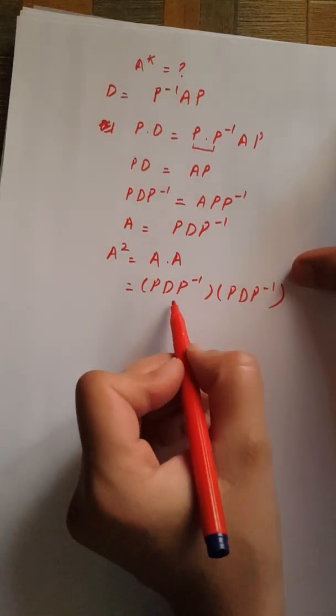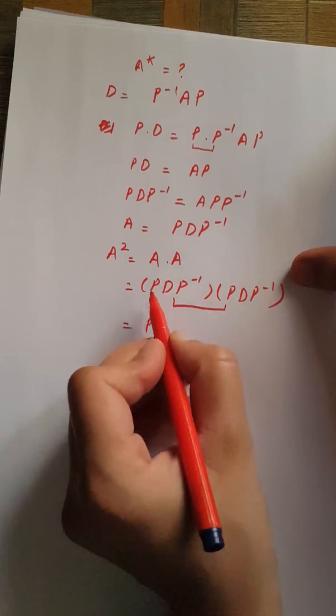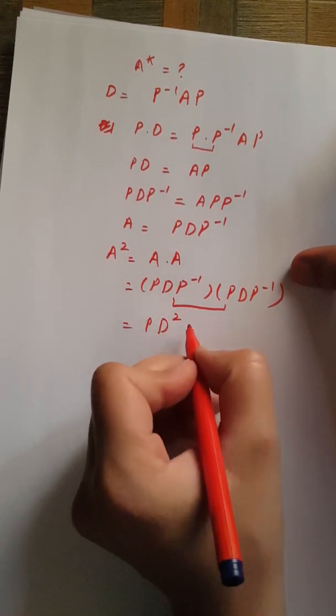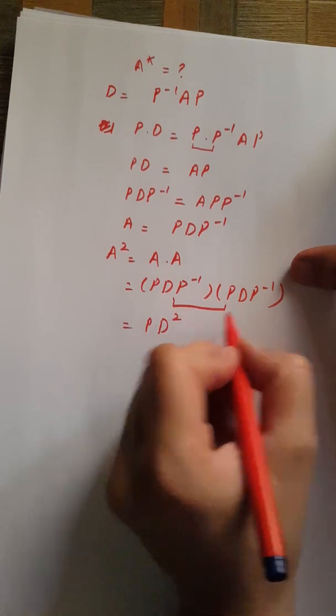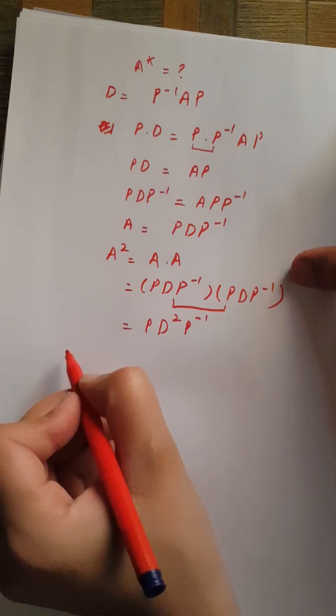You can clearly see P times P inverse results in identity, and we are left with PD squared P inverse. Similarly, if you want to compute higher powers of A...